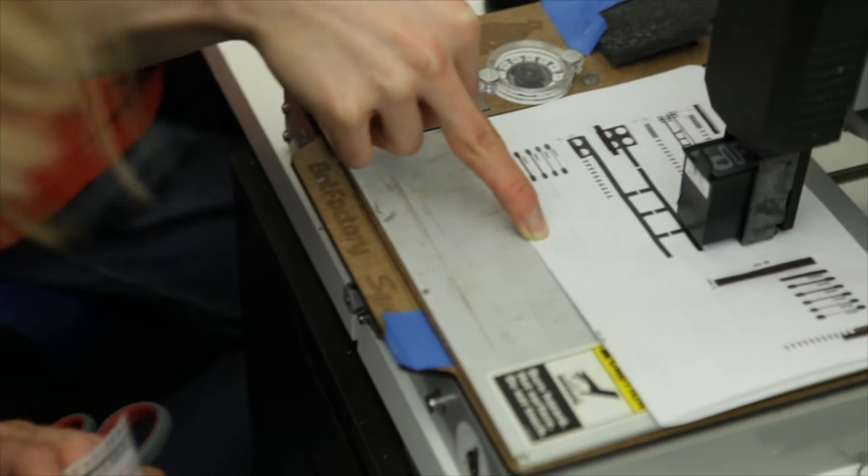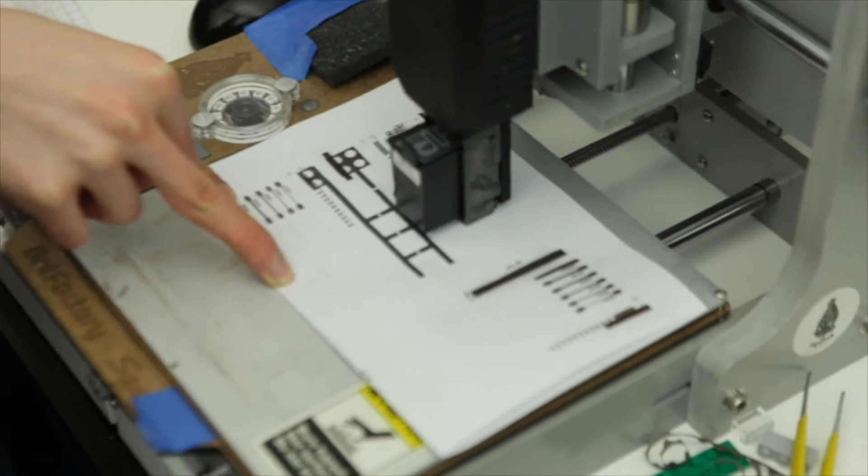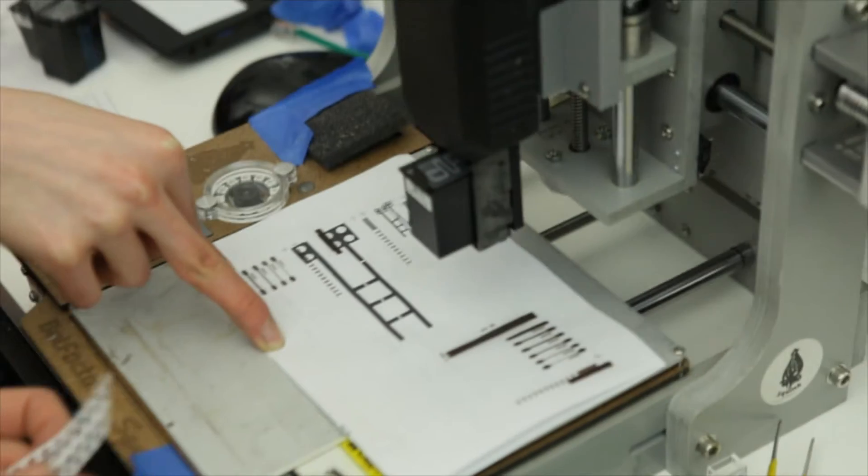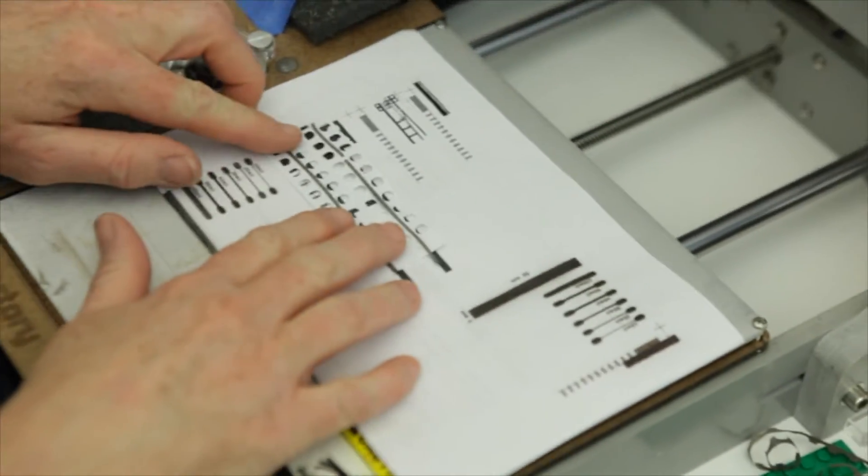And the nice thing is, when you design in millimeters in Inkscape and you go to export your bitmap, you can just set it at 300 DPI and it matches everything perfectly.